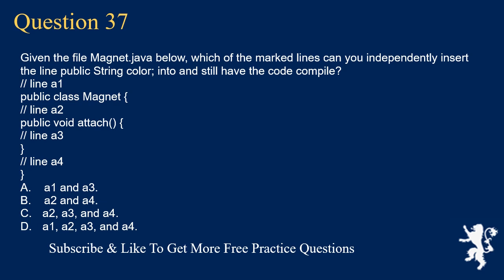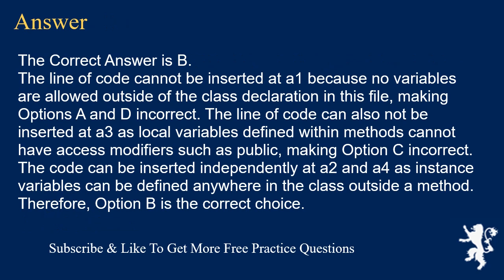Question 37: Given the file magnet.java, which of the marked lines can you independently insert the line 'public String color' into and still have the code compile? // line A1, public class Magnet, // line A2, public void attach() { // line A3, } // line A4. Options: A) A1 and A3, B) A2 and A4, C) A2, A3 and A4, D) A1, A2, A3 and A4. The correct answer is B. A1 is outside the class declaration where no variables are allowed, making A and D incorrect. A3 is inside a method where local variables cannot have access modifiers like public, making C incorrect. The code can be inserted at A2 and A4 as instance variables can be defined anywhere in the class outside of a method.